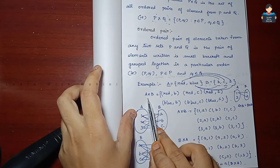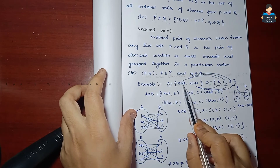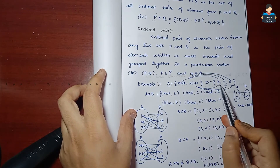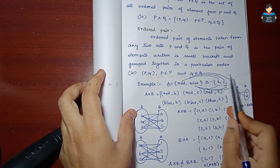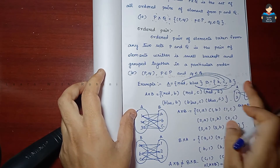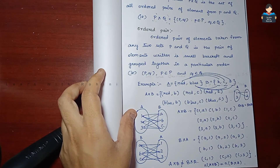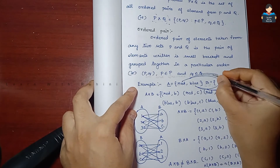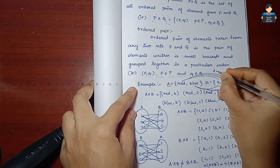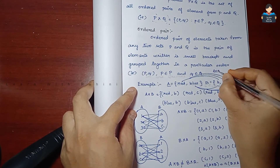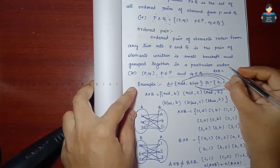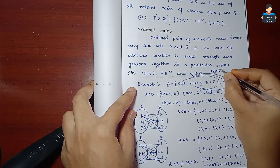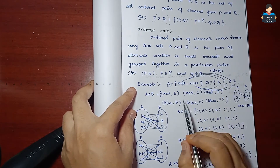Let's look at the example with red, blue and B, C, S. n of A cross B equals n of A multiplied by n of B.